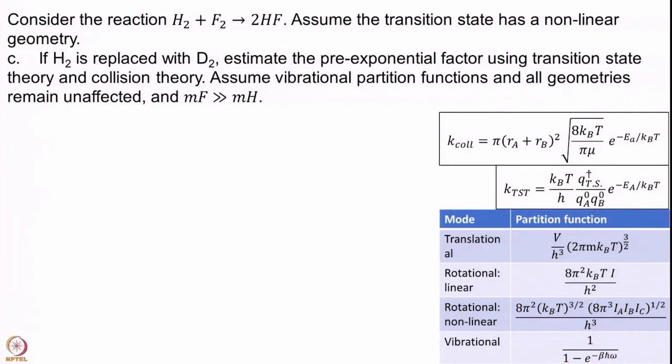Final problem — and this is a harder problem. If H2 is replaced with D2, can you estimate the pre-exponential factor using transition state theory and collision theory? You can assume vibrational partition functions are independent of mass, geometries are independent of mass, and that the mass of fluorine is much greater than the mass of H. This is slightly open-ended, and such a problem I would never give in an examination setting — but all teaching is not about examinations. Take a pause and attempt the problem on your own.